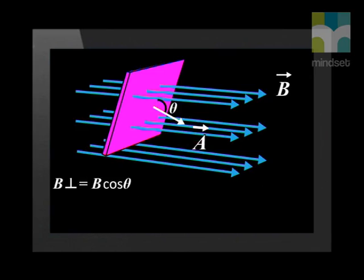Let theta be the angle between the magnetic field and the normal to the area. Then the component is equal to the magnetic field B multiplied by cos theta.